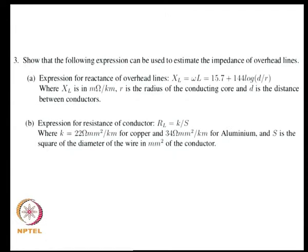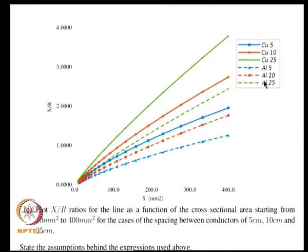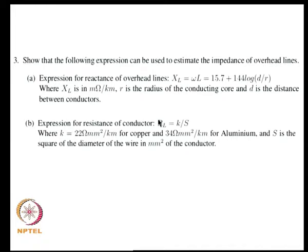In the last class we were working out an expression for the reactance and resistance of the line. We got an expression for the reactance as shown, and the expression for the resistance of the line is determined by the properties of the conductor and cross-sectional area. Once you have the X and R values of the line, you can plot the X/R ratio and get it as some function of the occupied area and the distance between conductors.